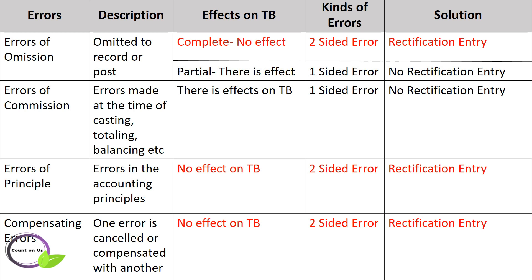Finally, compensating errors — when one error is cancelled or counterbalanced by another error. For example, purchase account is undercast by 200 dirhams and the sales account is also undercast by the same amount, 200 dirhams. So it won't affect the trial balance. It is also a two-sided error and requires a rectification entry.